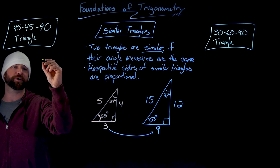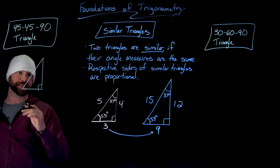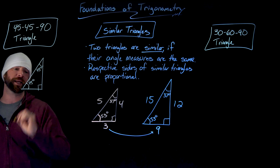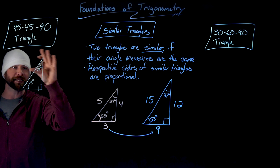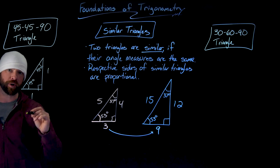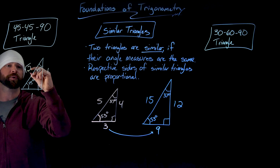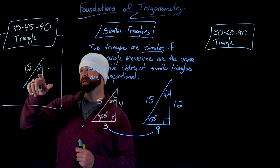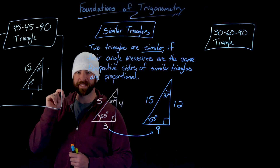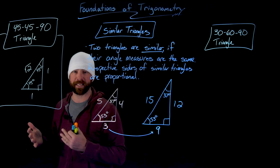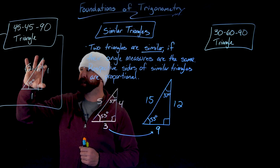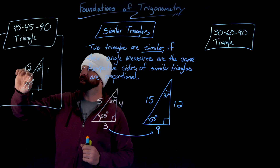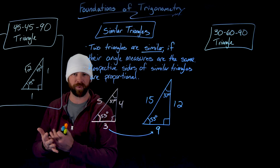For the 45-45-90 triangle: if we have a 90-degree angle, a 45-degree angle, and another 45-degree angle, the triangle has side lengths of 1 and 1 for the two legs. Because the 45 and 45 angle measures are the same, these sides have to be exactly the same — the size of the angle determines the length of the opposite side. Then using the Pythagorean theorem, a² + b² = c², we get the hypotenuse as the square root of 2.